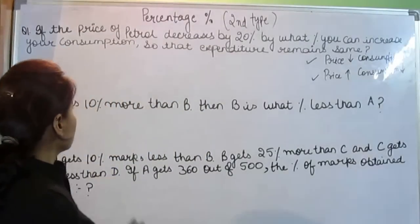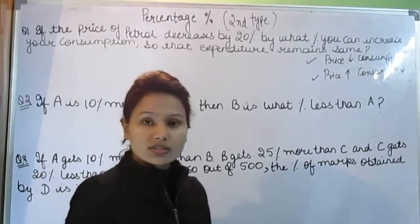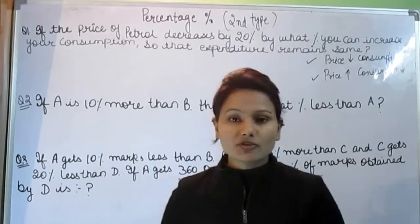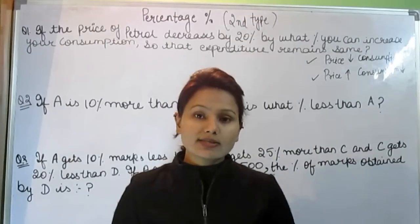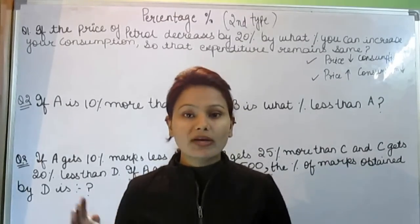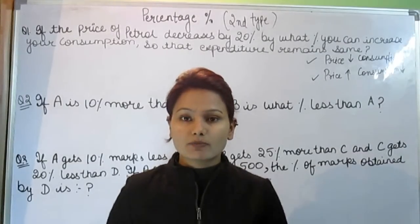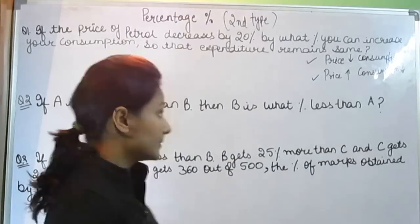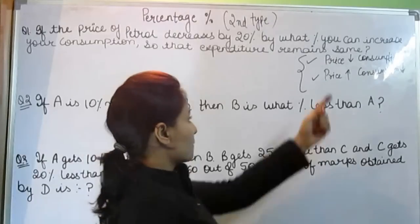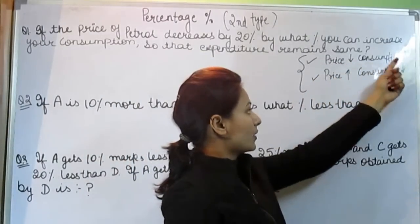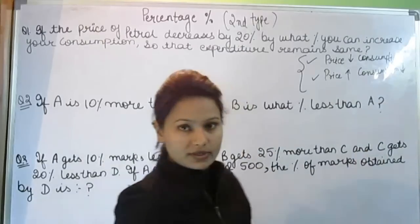Let's start with the second type. Before starting this chapter I would like to say one thing. This chapter is totally based on one funda: when price is increased then consumption will decrease, and when price decreases then consumption will increase. Price decrease means consumption increase; price increase means consumption decrease.